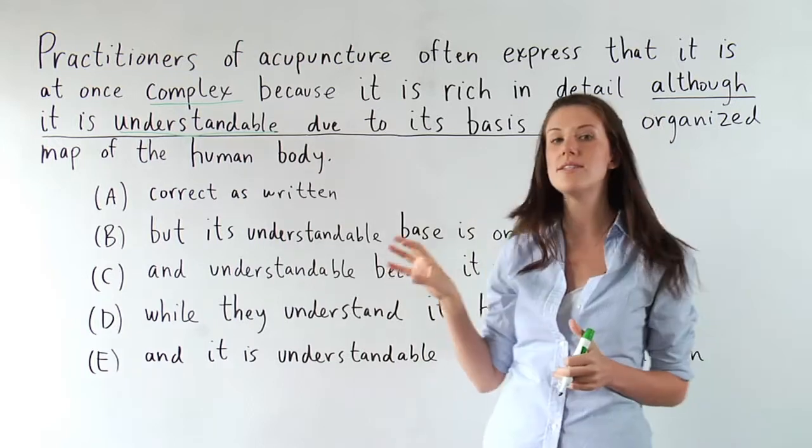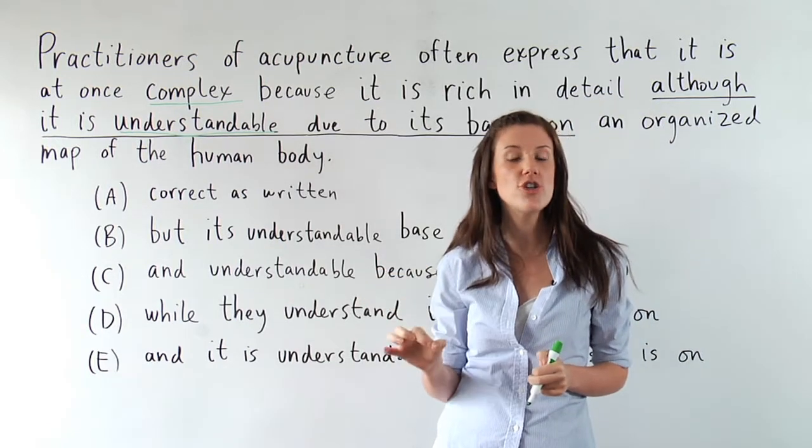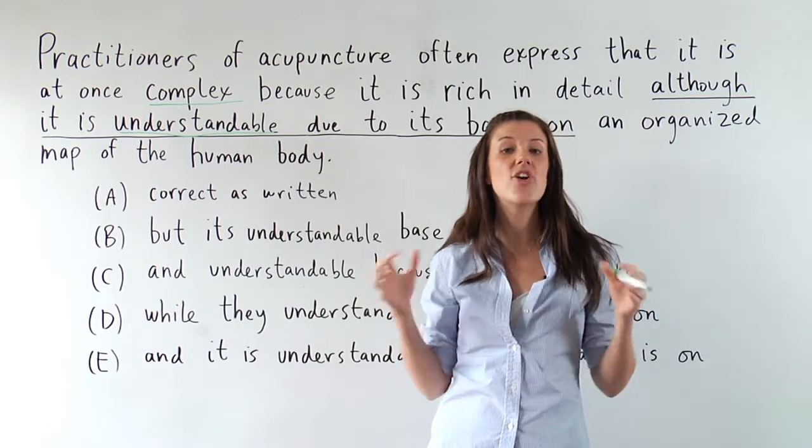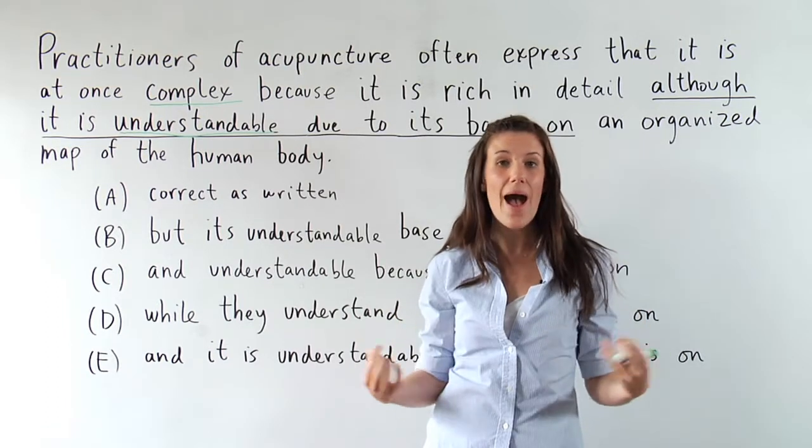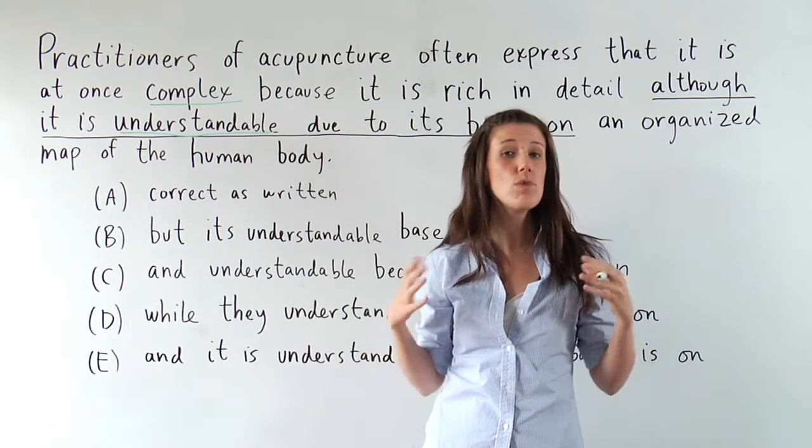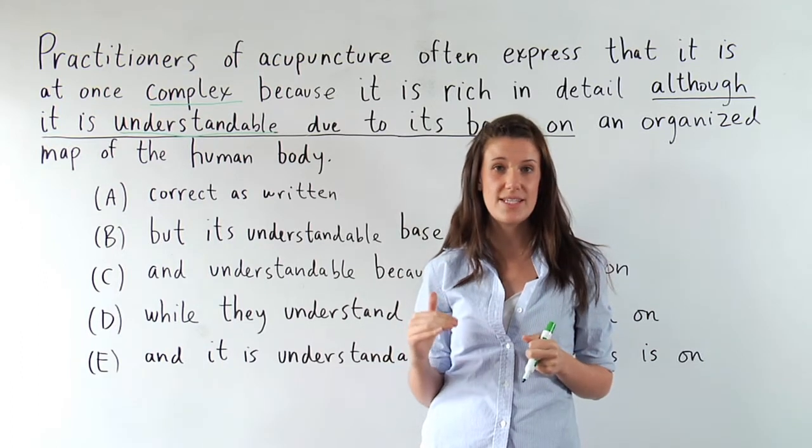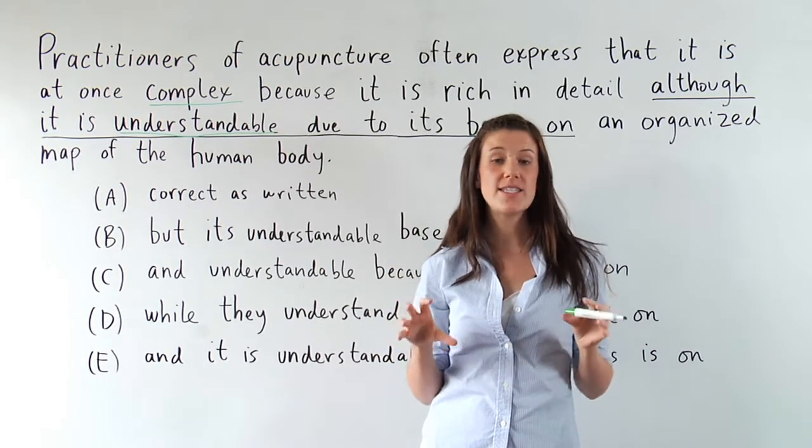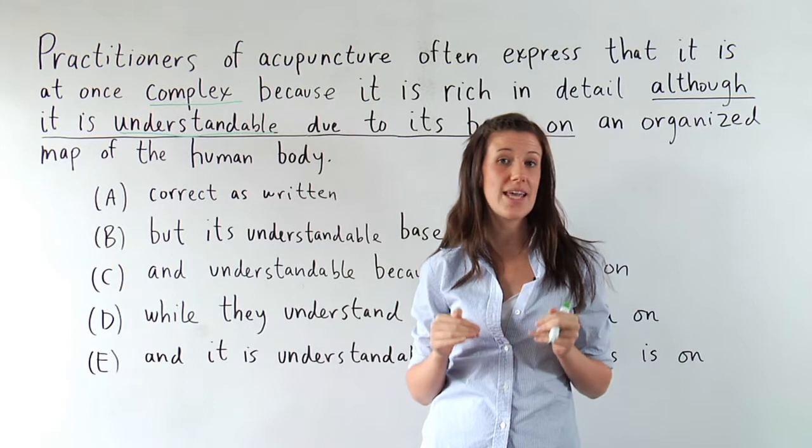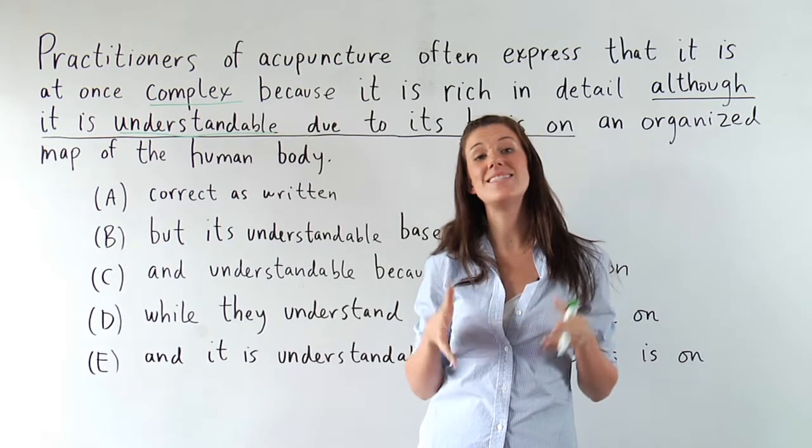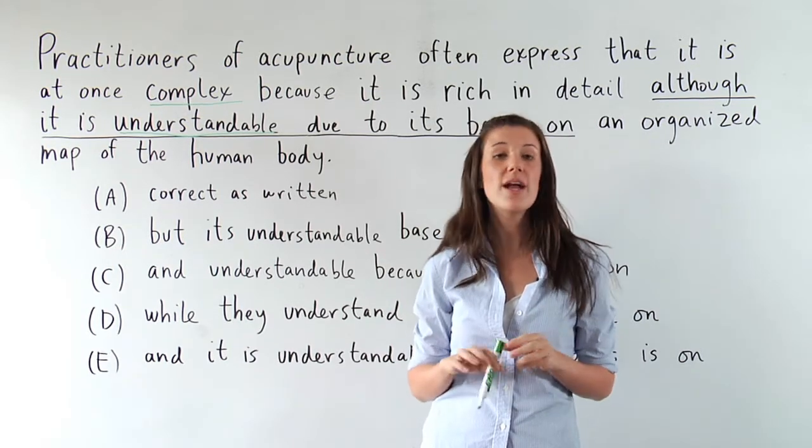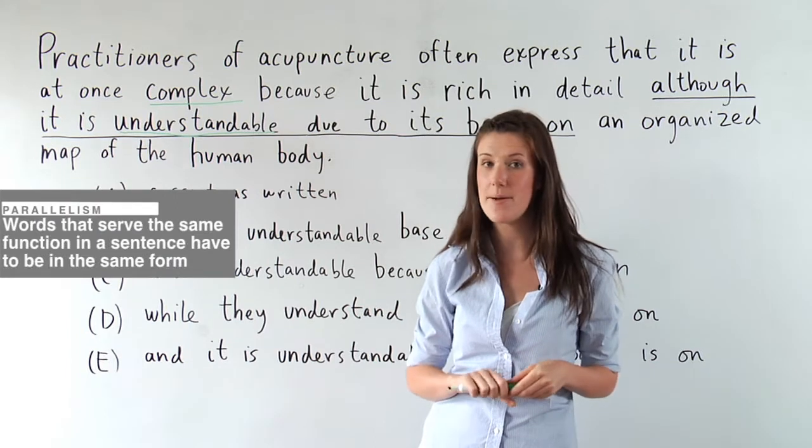So I've got two words in the sentence here, and they're functioning in the same way. They're in the sentence for the same reason, to describe acupuncture. So there's a rule on the SAT: when words or phrases in a sentence are functioning in the same way, they have to be in the same grammatical form. You might have heard this described as parallelism.